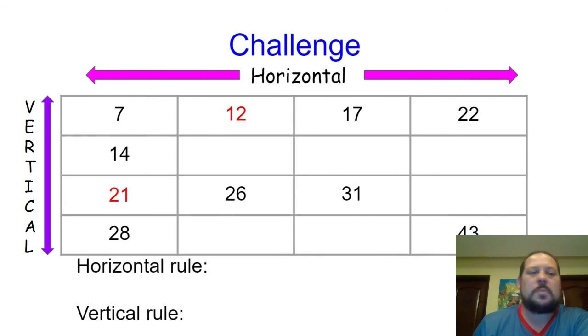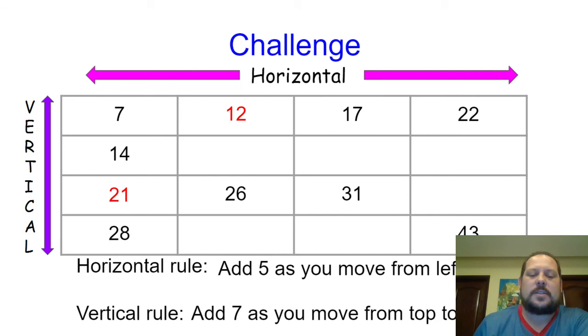The horizontal rule from left to right would be, yes, add five as you move from left to right. How about the vertical rule from top to bottom? How much do we need to add? Excellent. Add seven as you move from top to bottom.